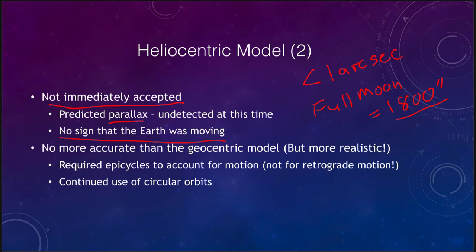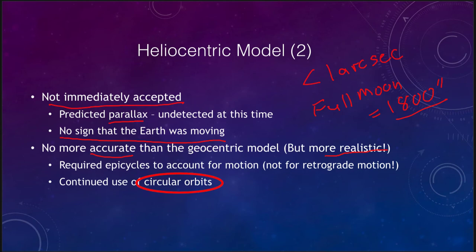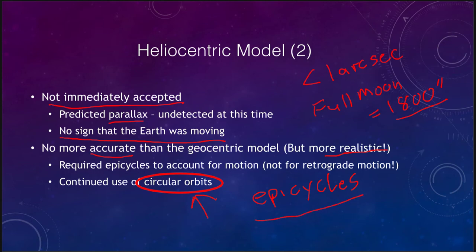The heliocentric model was no more accurate in terms of predictions than the geocentric model — in terms of predicting where the planets were going to be. It was no more accurate, but it was more realistic. The problem was that it continued the use of circular orbits, and that then required the use of epicycles — not to explain retrograde motion, but to explain small deviations in the orbit from a perfect circle. So it was really no more accurate in predicting planet positions, though it was far more accurate in terms of what reality is.